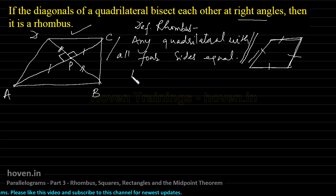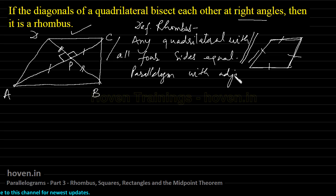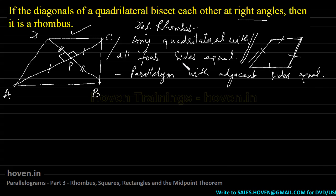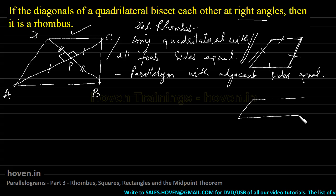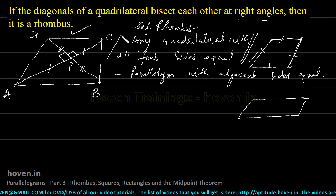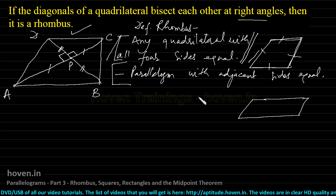We would better say: a rhombus is a parallelogram with adjacent sides equal. This is another definition. When you say a quadrilateral with all four sides equal, it already implies the figure is a parallelogram. Not all parallelograms have adjacent sides equal, so a rhombus is a special parallelogram in which all four sides are equal. These two definitions are effectively one and the same.